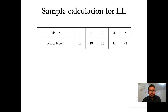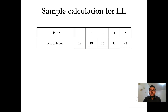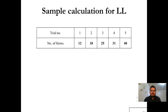For the sample calculation of the liquid limit, we perform the test for 5 trials at different moisture contents. For example, we might first get a number of blows at moisture content around 18. To increase the number of blows, we need to decrease the moisture content — we add some dry soil to the paste, mix it properly, and run the test again. If the moisture content is higher, the required number of blows is less, because with more moisture content the soil more likely behaves as a liquid and merges with less energy.